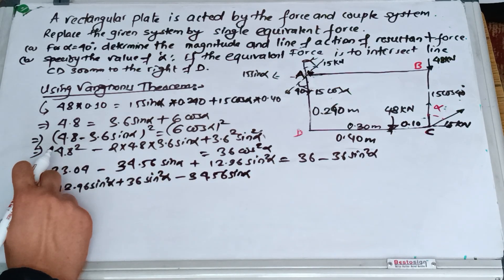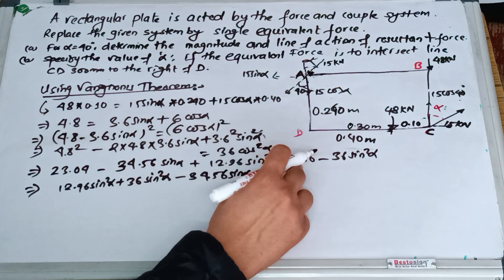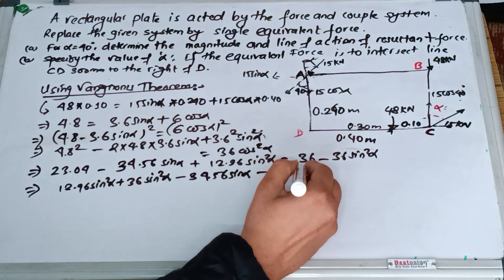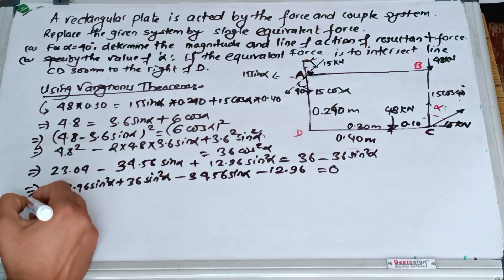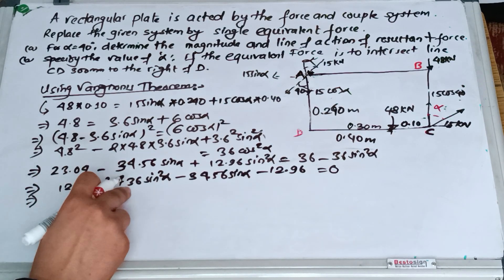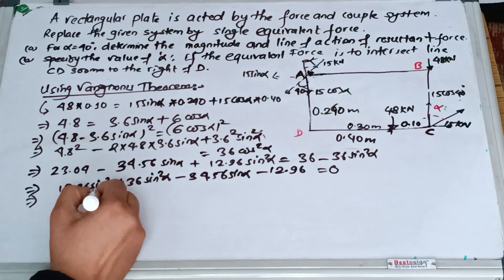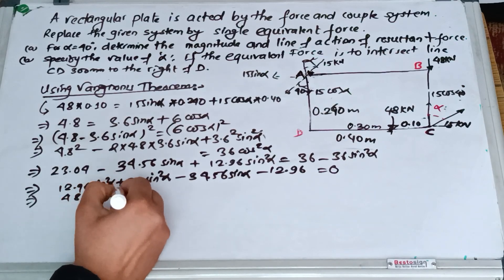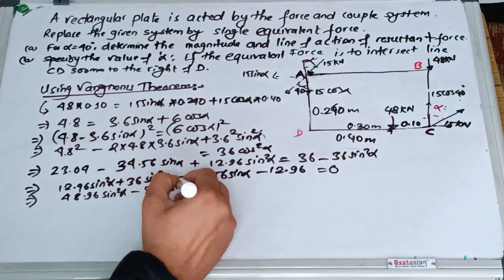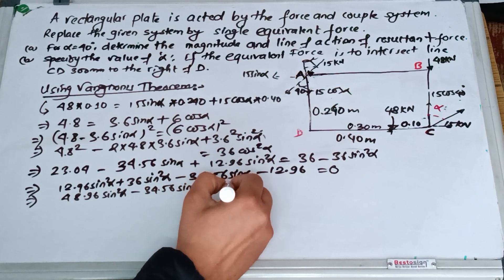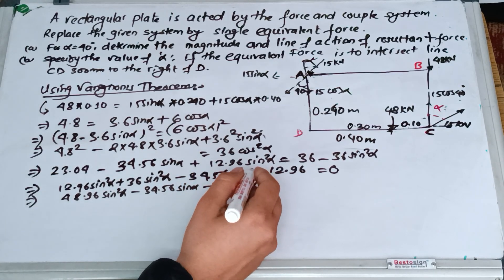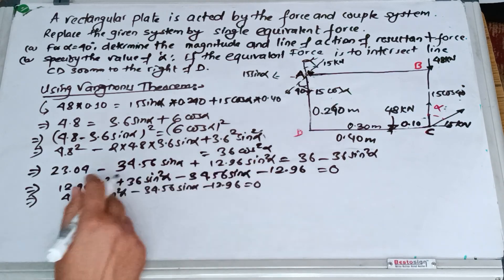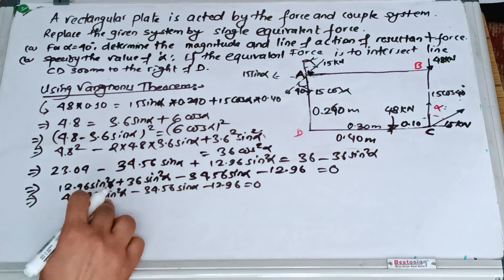Minus 12.96 sin alpha minus 12.96 equals zero. So this is a quadratic equation in sin alpha.